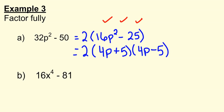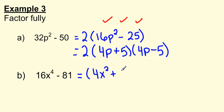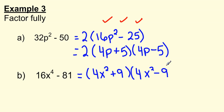Let's try the next one: 16x to the 4th minus 81. Can I take the square root of 16x to the 4th? Yes, that would be 4x squared. Can I take the square root of 81? That would be 9. So, 16x to the 4th minus 81 factors as 4x squared plus 9 times 4x squared minus 9. And there you have it — factoring by difference of squares.